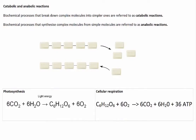Biochemical processes can be categorised by whether they build up or break down molecules. Those in which complex molecules are broken down into simpler ones are referred to as catabolic reactions. This occurs when food is digested — larger molecules such as fats, proteins, and carbohydrates are broken down into smaller molecules. The opposite occurs when simple molecules are joined together to form more complex molecules, and these are referred to as anabolic reactions. An example is when amino acids are joined together to form proteins.